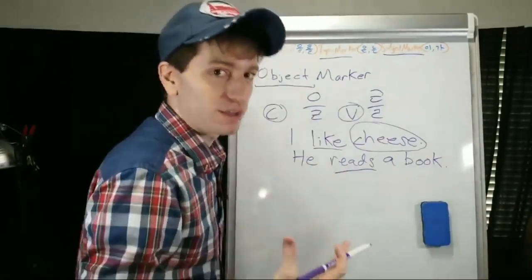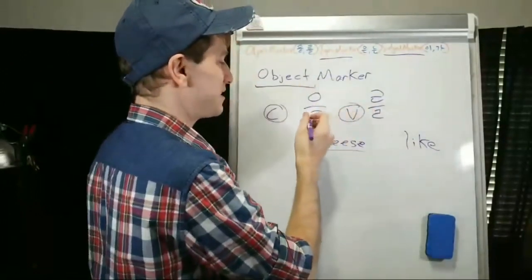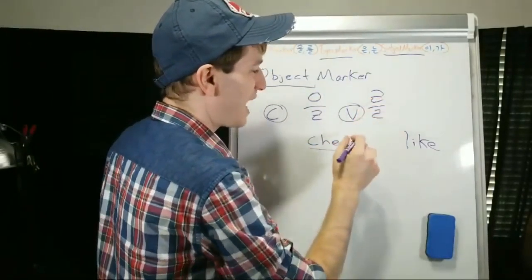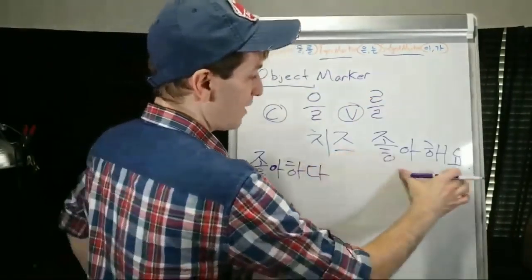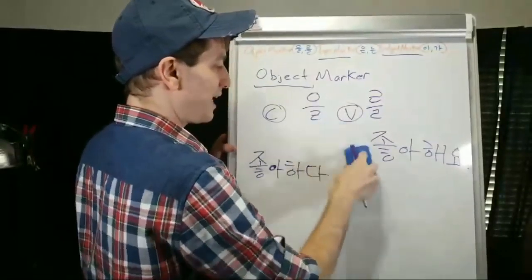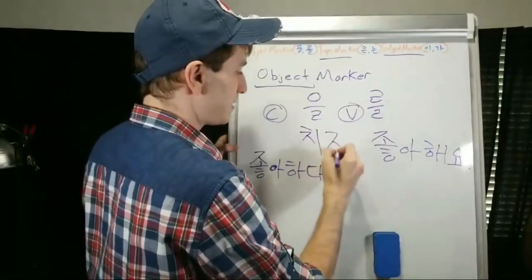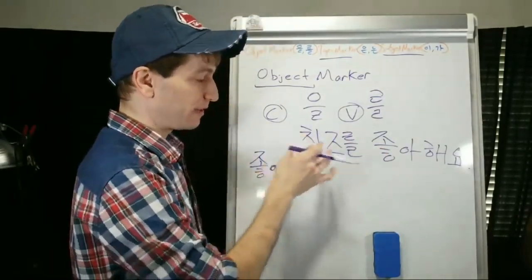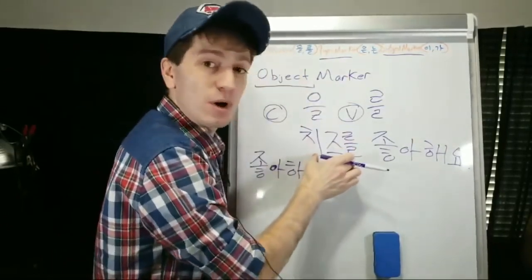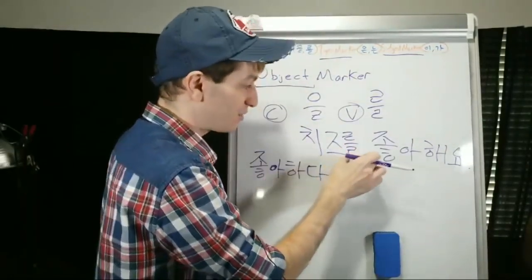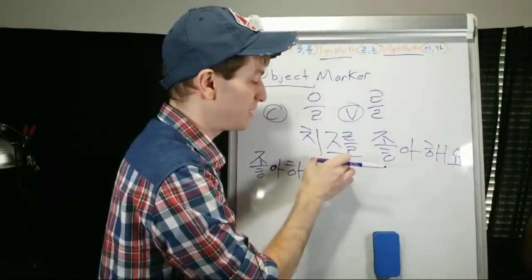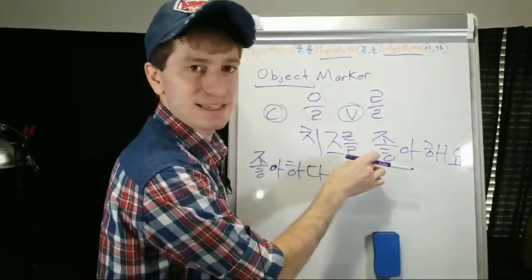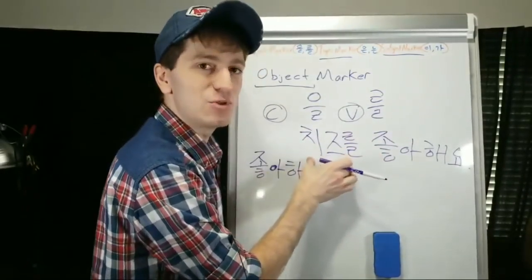In Korean, we have to mark that with the object marker. You add 을 after a consonant, and 를 after a vowel. So you have to mark what it is that you like — for example, 'I like cheese.' That tells the listener, when you're speaking and they hear the marker, that cheese is going to have something done to it. They know that something is going to happen to cheese — maybe you're going to kick it, eat it, or dislike it. As soon as the Korean hears this marker, they know that noun is being used as an object.